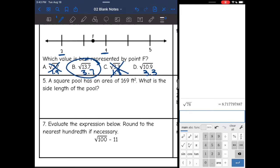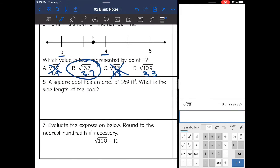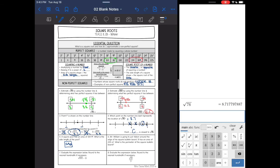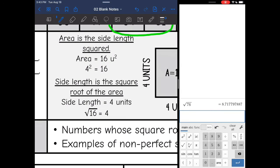Let's look at number 5. A square pool has an area of 169 feet squared. What is the side length of the pool? So remember what we said up here? To find a side length, you take the square root of the area.